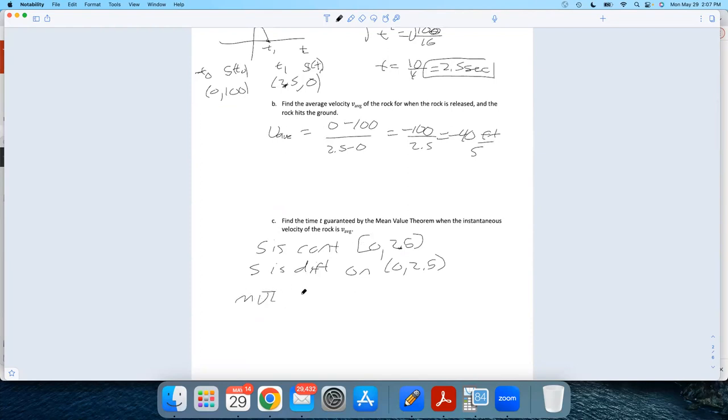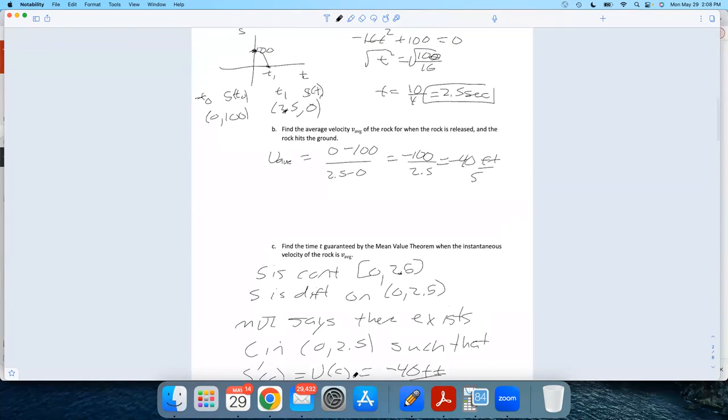the Mean Value Theorem says there exists - doesn't tell us where it is - but there exists a c in the open interval from 0 to 2.5 such that s prime of c, which is just the velocity, equals the average rate of change, which we found to be negative 40 feet per second. This is what the Mean Value Theorem says.